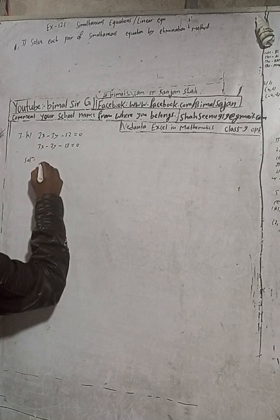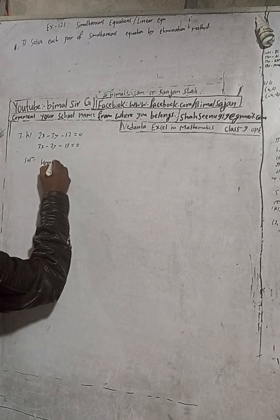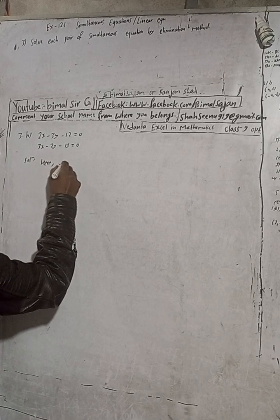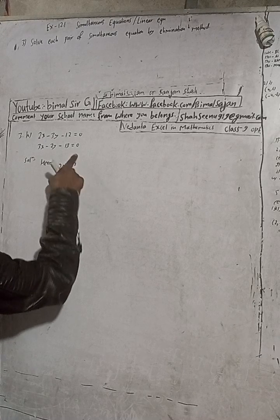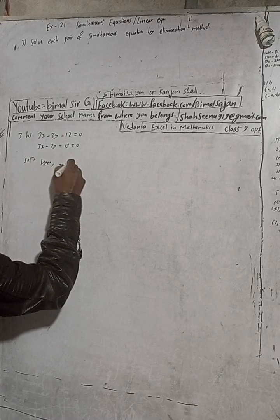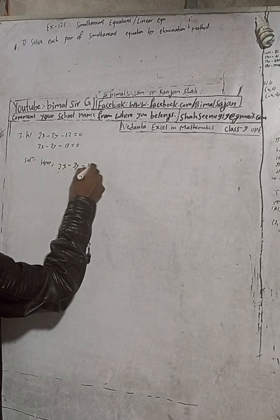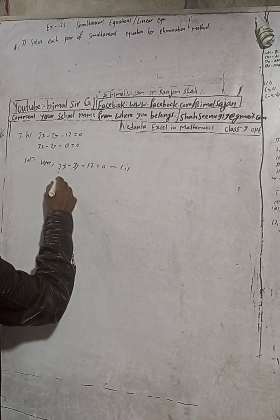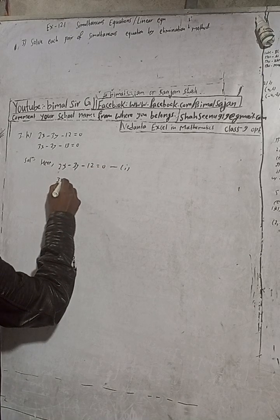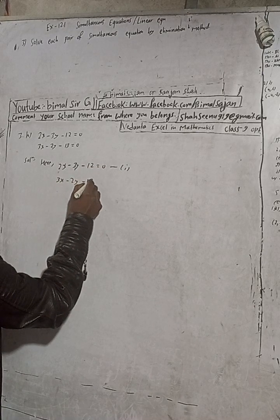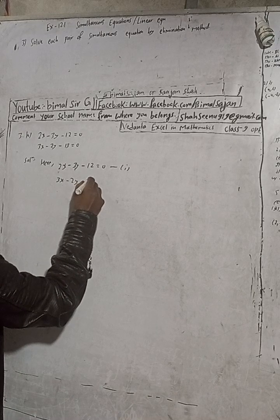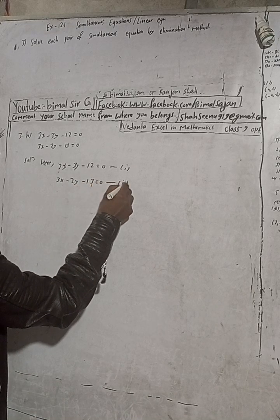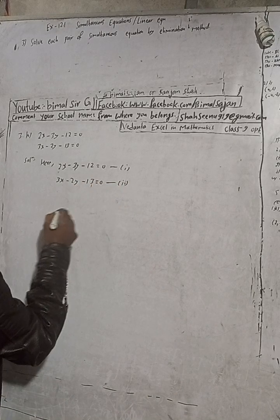So in elimination method, what is the trick here? We have our equation 1: 2x minus 3y minus 2 equals 0, and equation 2: 3x minus 2y minus 13 is equal to 0.